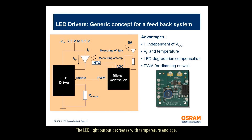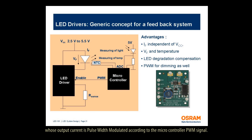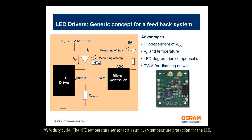The LED light output decreases with temperature and age. A feedback loop can compensate for these changes. The system shown here uses an LED driver whose output current is pulse width modulated according to a microcontroller PWM signal. A photodiode measures a fixed portion of the LED light output, enabling the controller to adjust the PWM duty cycle. The NTC temperature sensor acts as an over-temperature protection for the LED. The insert shows a typical LED driver demo board, courtesy of National Semiconductor.